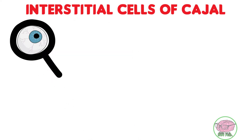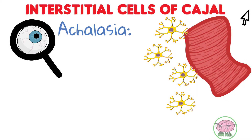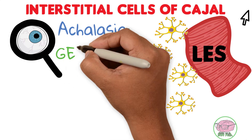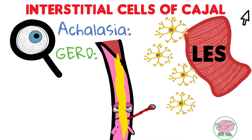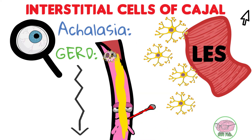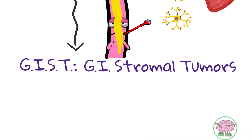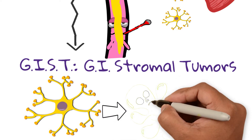In the disease known as achalasia, the interstitial cells of Cajal have fewer contacts with motor neurons in the lower esophageal sphincter. Also, in gastroesophageal reflux disease, esophageal inflammation can affect the interstitial cells of Cajal, affecting esophageal contraction, which can worsen the esophageal reflux. It is also believed that tumors called GIST, known as gastrointestinal stromal tumors, are originated from the interstitial cells of Cajal.